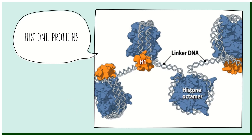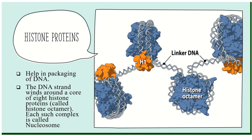Chromatin is made up of DNA and histone proteins. Histone proteins help in the packaging and supercoiling of DNA — that is their most important function. These histone proteins form a structure called a nucleosome. A nucleosome is a strand of DNA wound around eight histone proteins, also called a histone octamer. When a DNA strand winds around the eight histone proteins, it forms this complex structure called a nucleosome — which is what you see inside the nucleus.